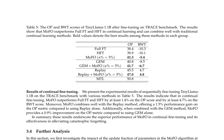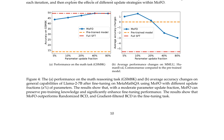The OP and BWT scores of TinyLLaMA-1.1B after fine-tuning on the TRACE benchmark show that MoFo outperforms Full-FT and HFT in continual learning and combines well with traditional continual learning methods. Specifically, MoFo with an update fraction of 5% achieves the best results, with an OP score of 41.3 and a BWT score of 5.4. When combined with GEM, MoFo provides a 0.9% improvement on the OP metric compared to using GEM alone. Similarly, combining MoFo with the Replay method offers a 1.5% performance gain on OP, underscoring MoFo's superior performance in continual fine-tuning.